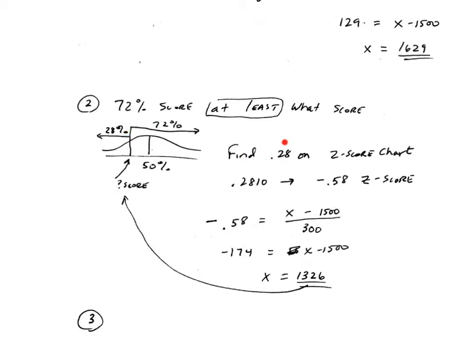So I found 28 percent on the z-score chart, 0.2810 was as close as I could get, and the z-score was negative 0.58. So I figured out the individual SAT score that would have a z-score of negative 0.58. Multiplied each side by 300, added 1,500 to both sides, and got a score of 1326. So 28 percent of the students score less than 1326 on the SAT, and 72 percent score at least 1326.